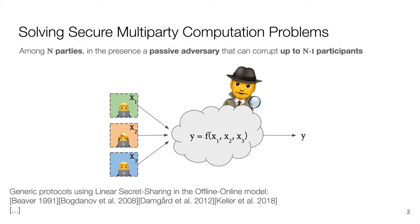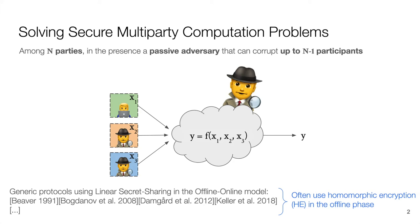We consider a setting where a passive adversary can observe all the communication between the parties and can corrupt n-1 participants. This is a well-studied problem for which many solutions have been proposed and implemented. Most of these implemented solutions are based on linear secret sharing schemes in the offline-online model, in which the parties generate multiplication triples during an offline phase to be used in the Beaver multiplication protocol during the online phase. Although it is common for these approaches to use homomorphic encryption techniques, this use is often confined to the offline phase only.